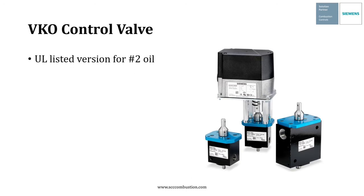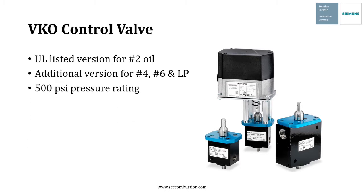The VKO comes in two basic variants. One is UL listed for use with number two oil. The other is not UL listed, but it's designed for and suitable for number four and number six oil and liquid propane. They're all rated to 500 psi and they're corrosion resistant so they can be used outdoors.